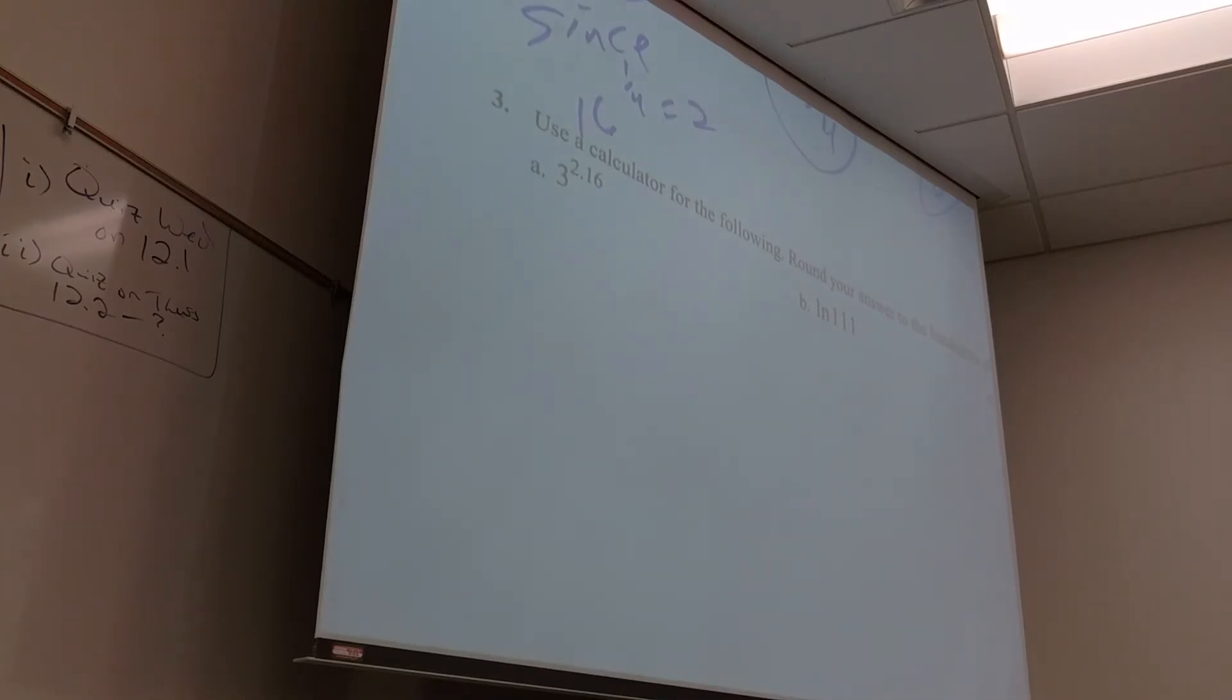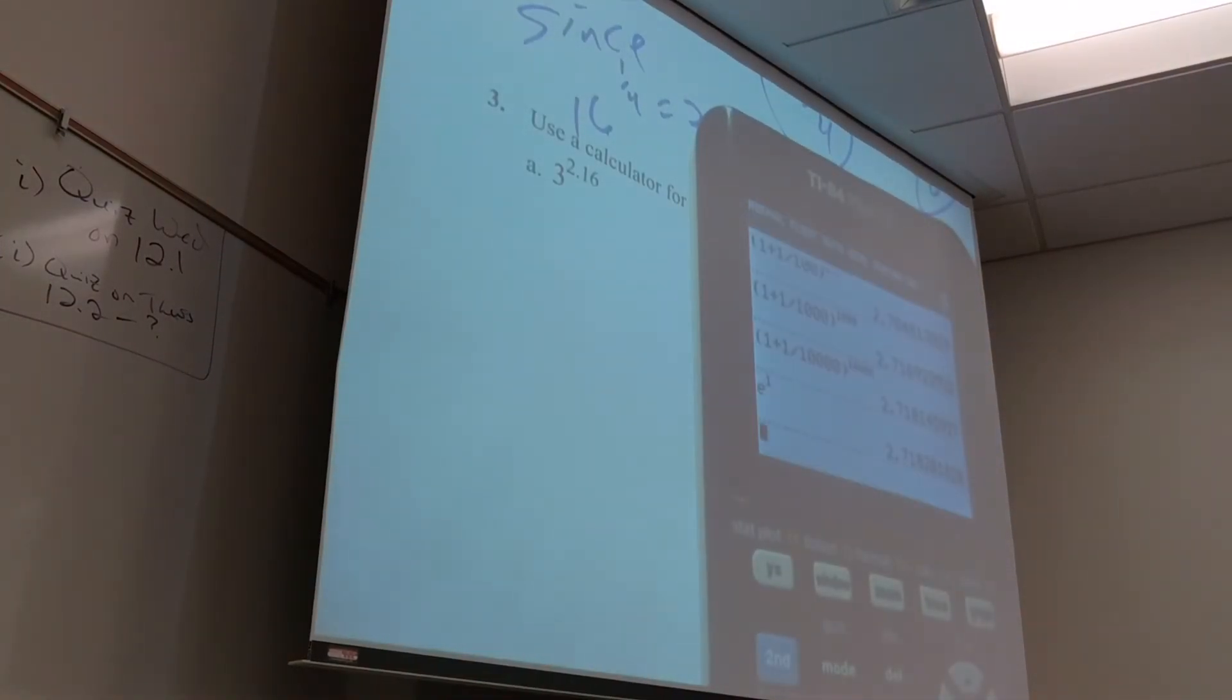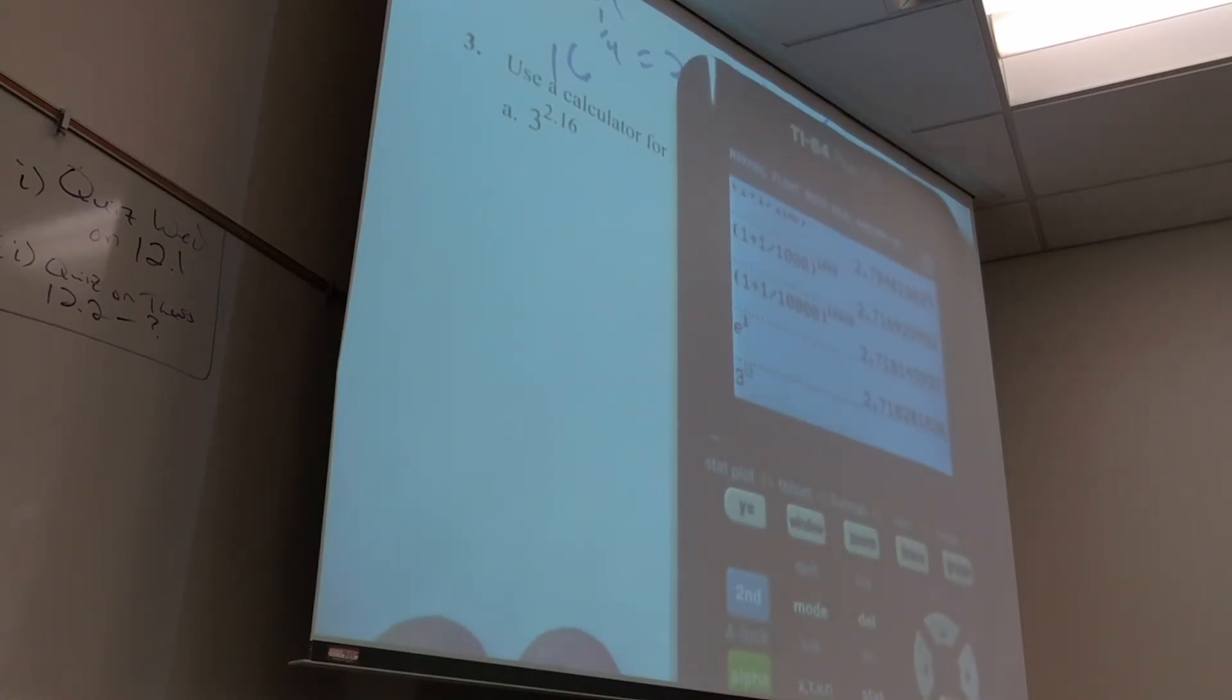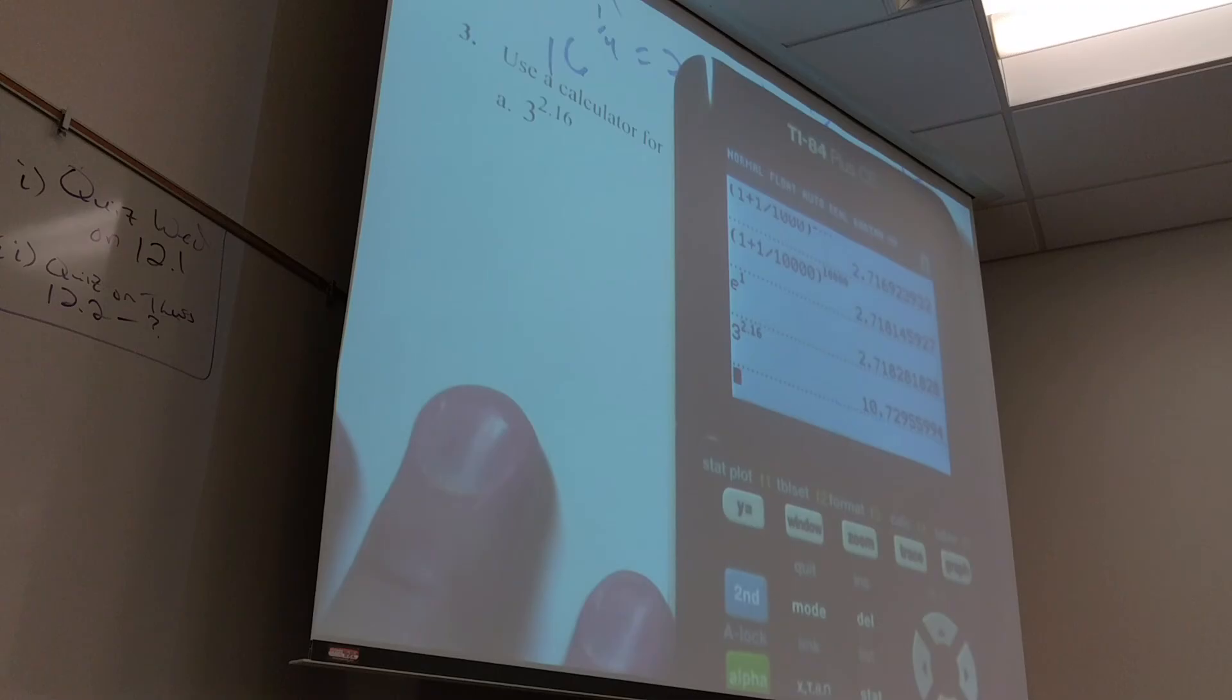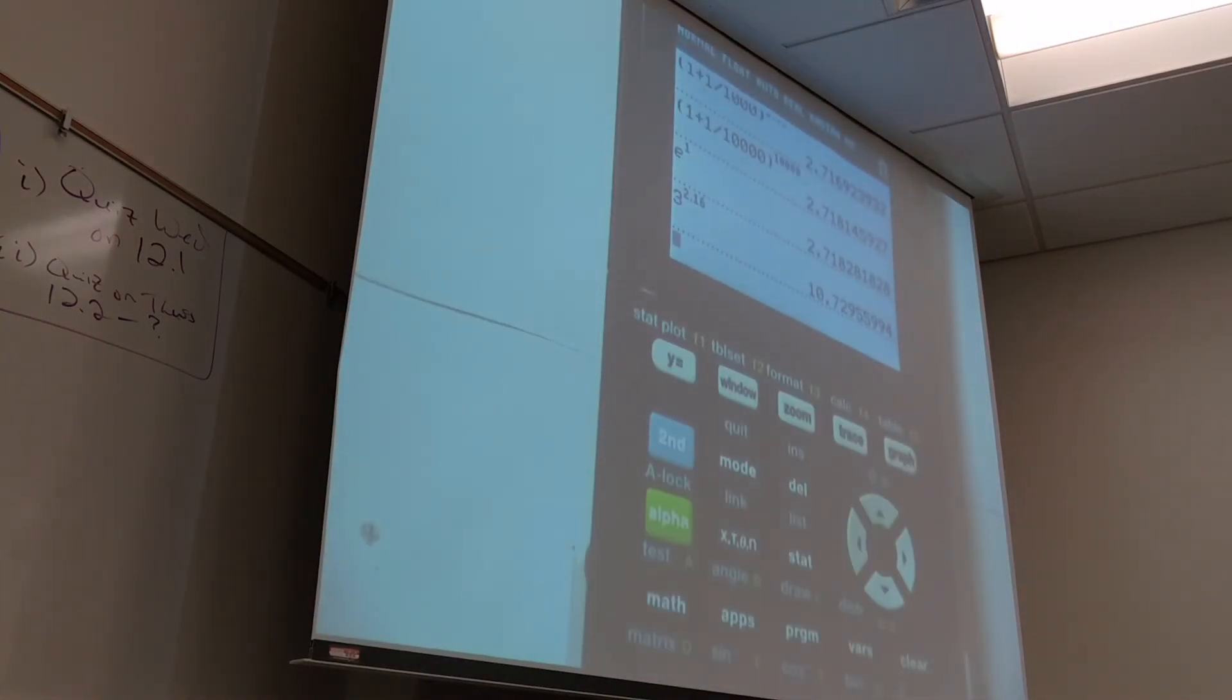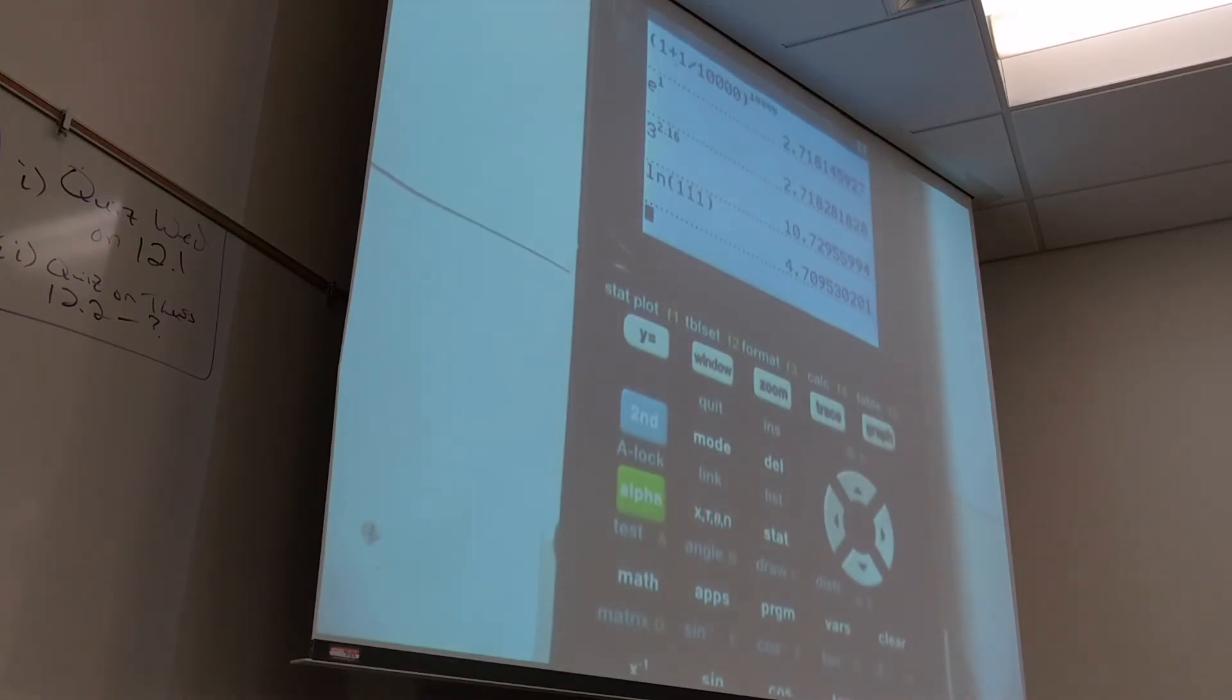And finally, let me just show you where I put my calculator. Then we'll take a break. So if you want to do three to the 2.16, some of you guys have one where it'll be three and then it'll have a carrot and then it opens parentheses. Just put 2.16 in there. So what did you guys get? Ten point seven three. Big number. Ten point seven three. I like it. So be really careful. In the homework, it tells you to round to the thousandth place. It's a great place to show off that you know what the hell the thousandth place is.